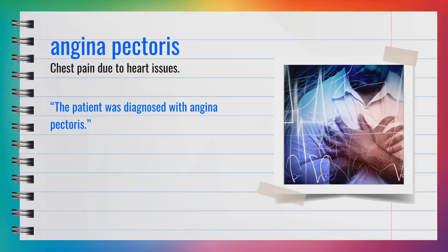The word angina pectoris, spelled A-N-G-I-N-A-P-E-C-T-O-R-I-S, is a noun. Synonyms include chest pain and heart pain. For example, the patient was diagnosed with angina pectoris. In summary, angina pectoris means chest pain due to heart issues.